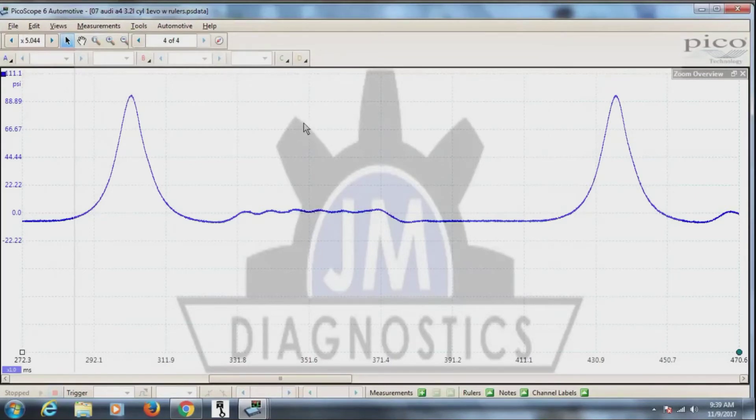The next one is inverting the waveform. Now, the place you're going to see this most and use it the most would be your secondary ignition captures when they get captured and they're in an inverted form and you want to see them in the normal form.